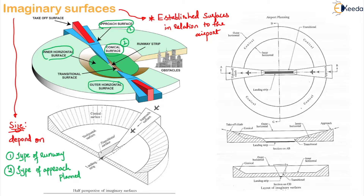After that you have your takeoff climb surface, also called the climb-off surface. And then finally your transitional surface. So we number these as three, four, and five. This is the obstruction arrangement we have, and that's the reason you have these many surfaces in the category.